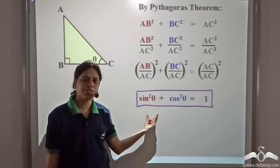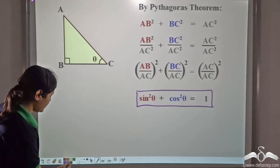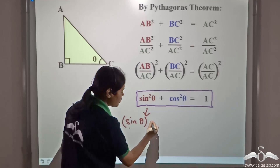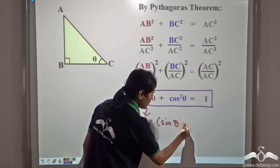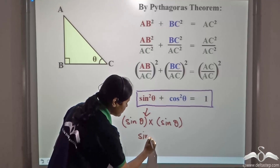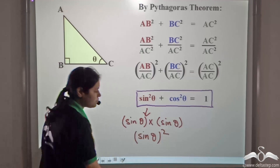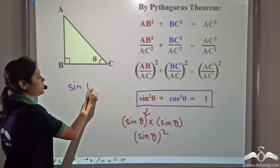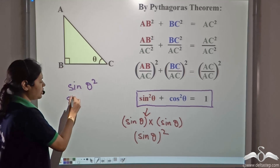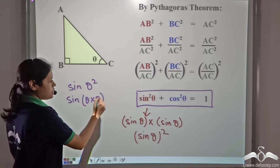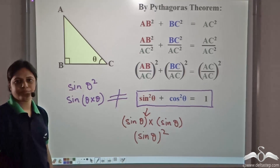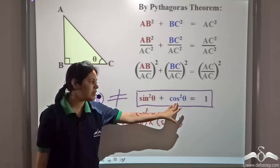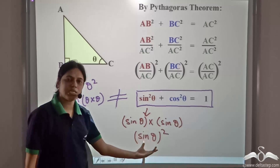A few points to be noted here: sin²θ is equal to sin θ into sin θ, or (sin θ)². This is not equal to sin(θ²), because sin(θ²) will mean sin of theta times theta. So, these two are not equal. Sin²θ means (sin θ)², that is sin θ into sin θ. Similarly, cos²θ means (cos θ)².